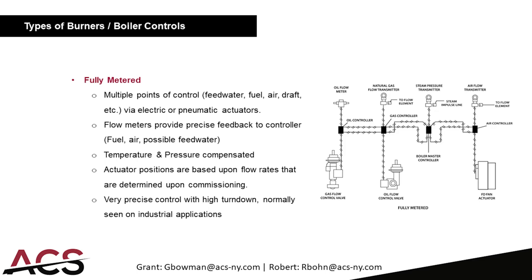The third control type uses flow meters with feedback. The controller sets a setpoint for oil — for example, 10 gallons per minute — monitors the fuel meter, and when it reaches that point holds it steadily at that flow rate. There is the ability to use temperature and pressure compensated meters. This is a very precise control and is normally used for industrial applications and larger water tube boilers.